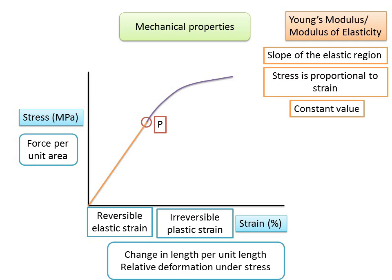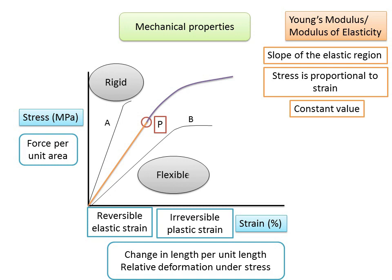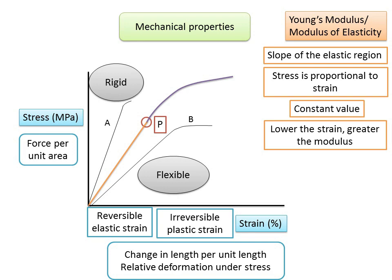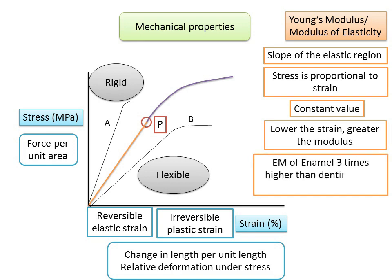Comparing two materials: Material A shows higher stress values but comparatively lesser strain, making it rigid with a higher Young's modulus. A second material withstands less stress but stretches to greater strain values, exhibiting lower Young's modulus and considered flexible. As an example, the elastic modulus of enamel is about three to seven times higher than that of dentine. Dentine is therefore more flexible and capable of sustaining significant plastic deformation under compressive loading before it fractures.